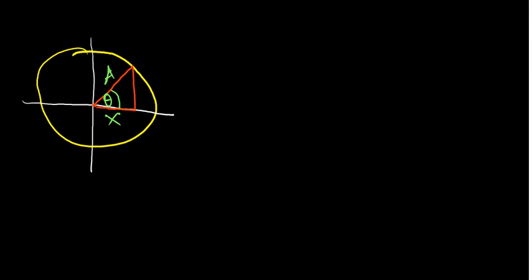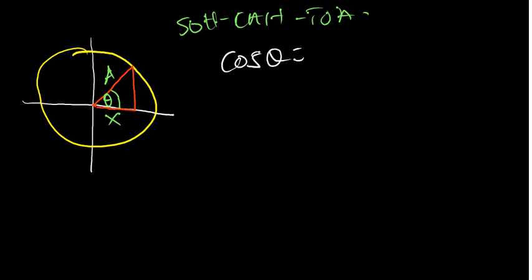x is the displacement as a function of time. We can use SOH-CAH-TOA to find the trig function that gives us displacement. We use cosine: cos θ equals the adjacent side x divided by the hypotenuse A. Solving for x gives us x = A cos θ.